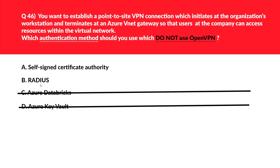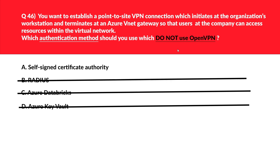Let's now look at option B, which says RADIUS. RADIUS provides an authentication method as required by the question. However, the problem with RADIUS is that it uses OpenVPN, but as per the question we do not need to use OpenVPN. Therefore this doesn't quite match, and we can reject this as well, locking option A — self-signed certificate authority — as the correct answer.